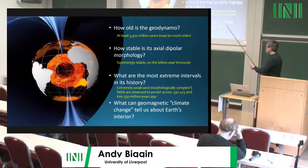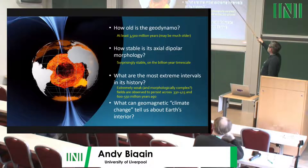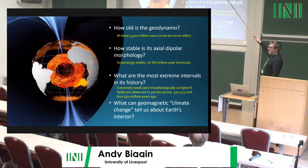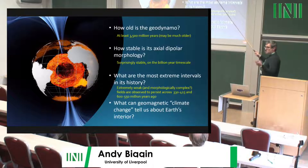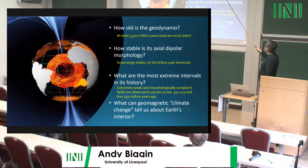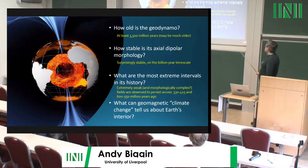Summarizing so far: we've had a geodynamo for at least 3.5 billion years, and it might be much older. It has held onto a dominant axial dipolar morphology for most of that time, but with very strong departures in at least these two intervals.